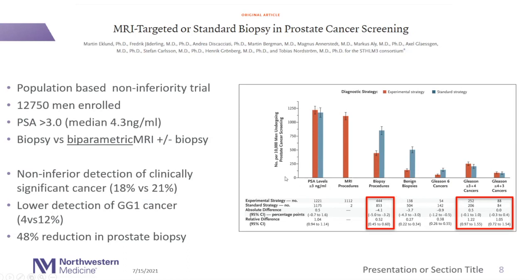They screened 12,750 men, with around 2,400 evaluated. Everybody in the experimental arm had an MRI, but only about 50% had an MRI finding warranting a biopsy — resulting in about a 52% reduction in biopsies performed. With that reduction, the detection rate of Gleason 3+4=7 or higher disease was equivalent in both arms, implying this is a non-inferior technique to biopsying everyone with a PSA over 3.